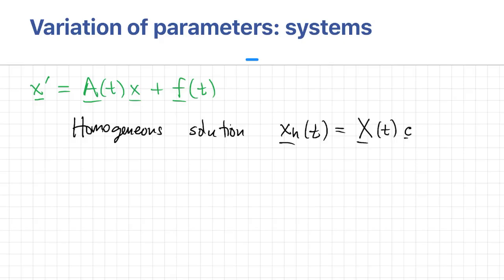Which we learned is a fundamental matrix times an arbitrary constant vector. To solve the forced problem, we also need to find a particular solution that includes the F. So how do we do that?